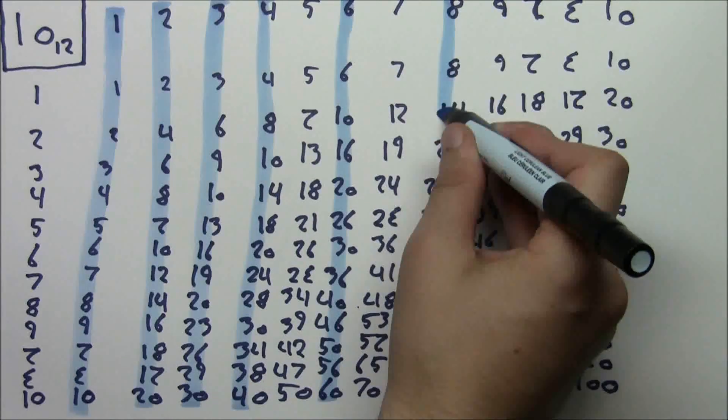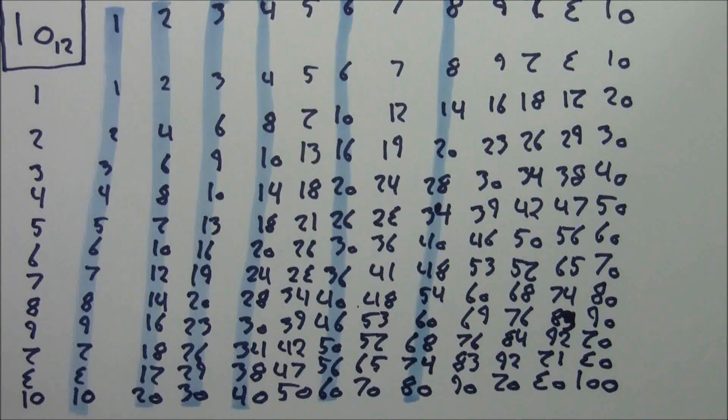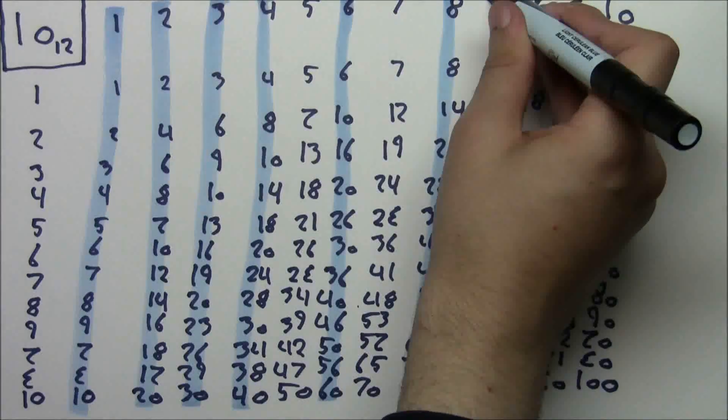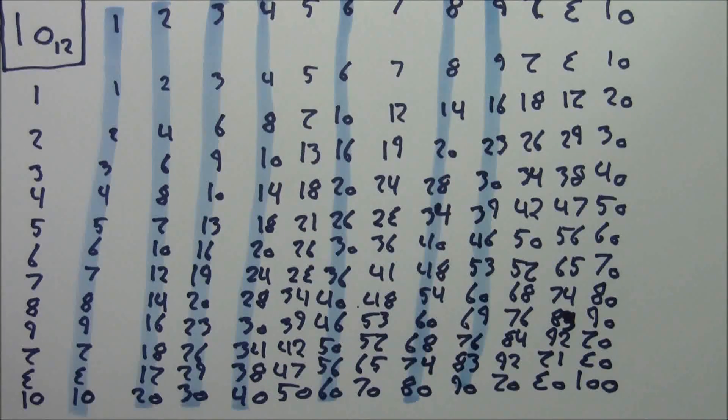Then for 8, we get 8, 4, 0, 8, 4, 0. We even get patterns in 9 with 9, 3, 6, 0, 9, 3, 6, 0.